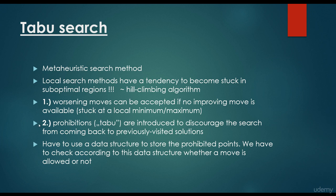Basically, these are the fundamental principles of tabu search: we are able to accept bad moves, and we maintain a so-called tabu list that discourages the search from coming back to previously visited solutions. We use a data structure to store prohibited points — the tabu list — and check whether a move is allowed or not. Tabu moves are positions we are not able to go to; these are prohibited moves.